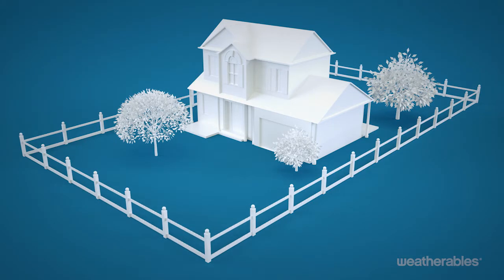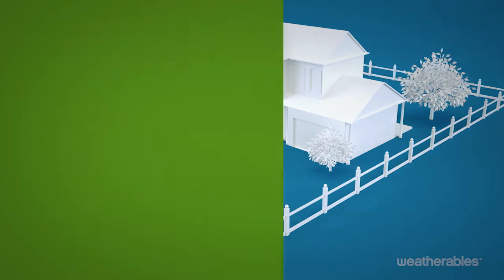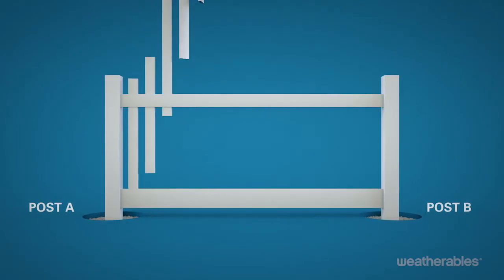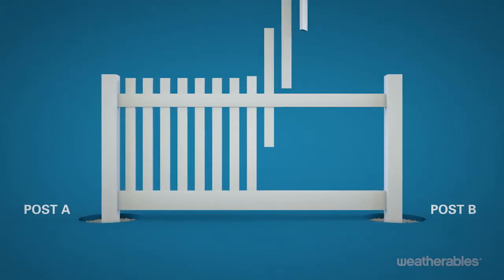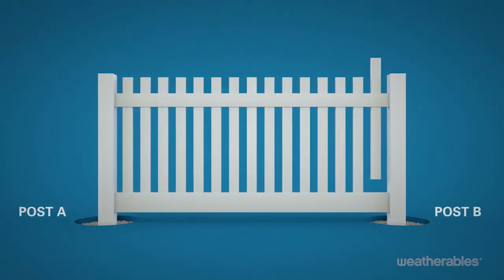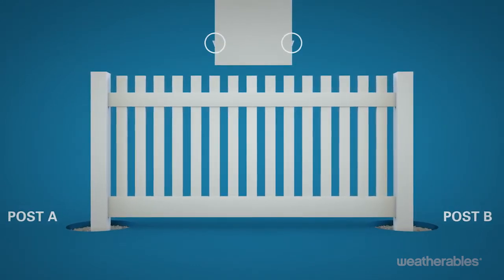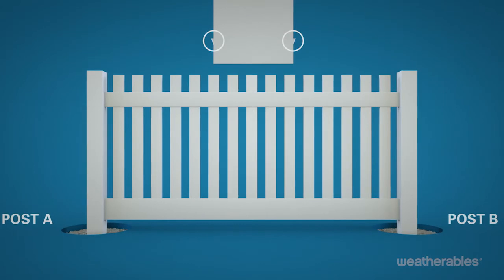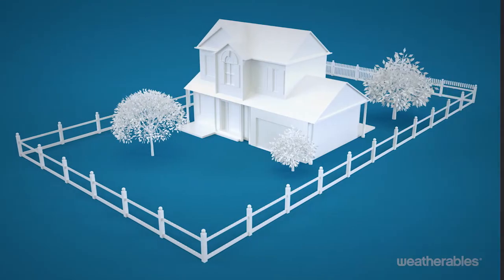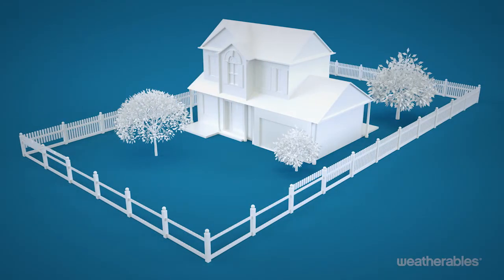Once all of the posts and rails are in place, it's time to insert the pickets. Insert the pickets with the notch side down through the routed holes in the top rail and into the bottom rail. The notches at the end of each picket will allow the picket to lock securely into the rail. Continue inserting pickets into all additional panels.